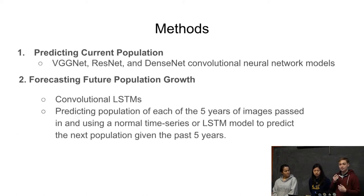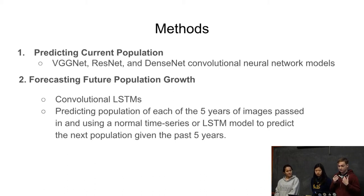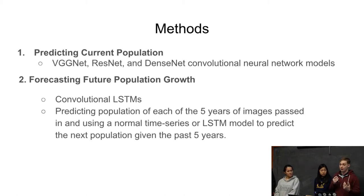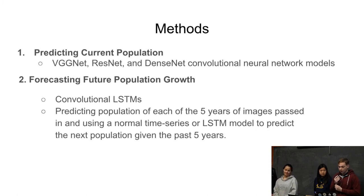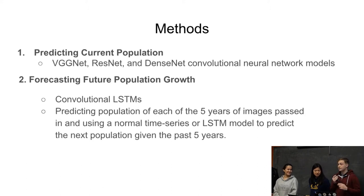We also want to try different models — just throw them at this problem, provide enough data, and see where we get. This task is more difficult than previous ones because it hasn't been done before, and we're focusing more on predicting the whole world's population with regression instead of just classification. We're also going to try convolutional long short-term memories as well as time series methods to predict from previous data to future data.